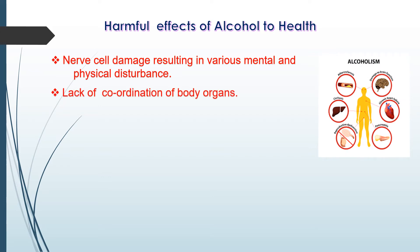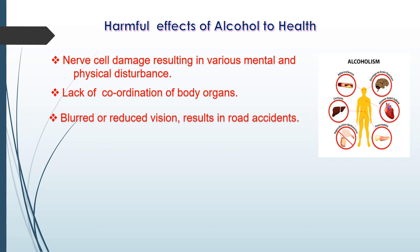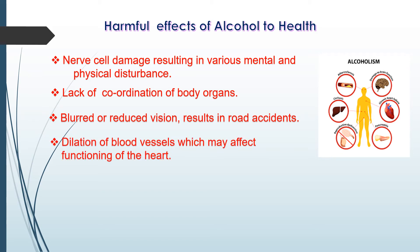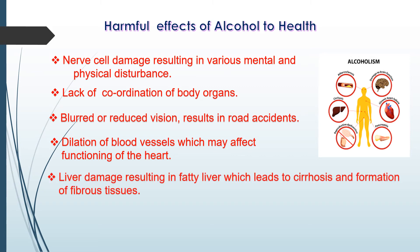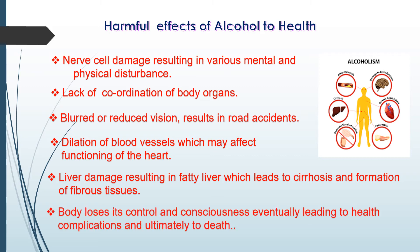Next: lack of coordination of body organs. When nerve cells are not working properly, all organs stop coordinating. Blurred or reduced vision results in road accidents. Dilation of blood vessels may affect the function of the heart. Liver damage results in fatty liver, which leads to cirrhosis and formation of fibrous tissues. The body loses its control and consciousness, eventually leading to health complications and ultimately to death.